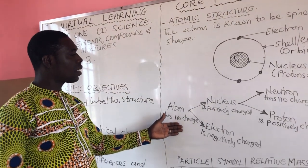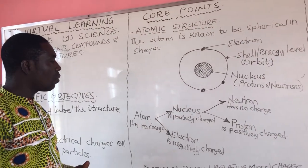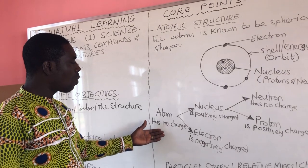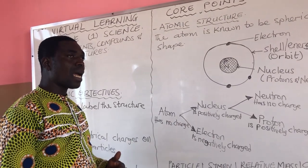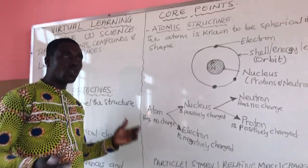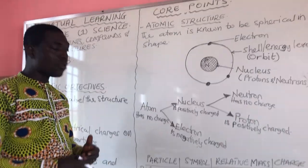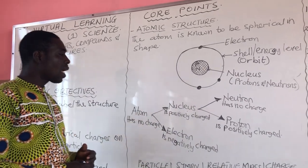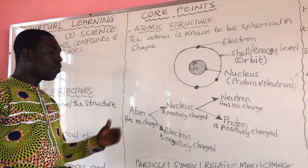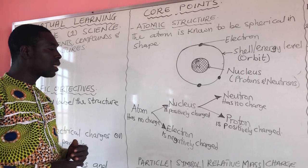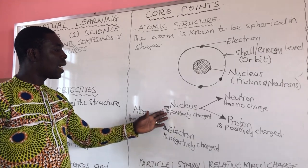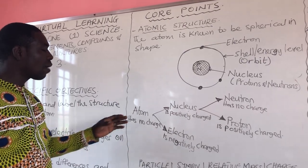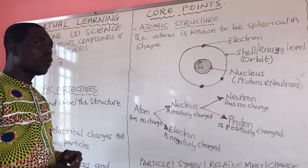Now let's look at the breakdown of the particles. An atom has no charge, which means that an atom is electrically neutral. This is because the protons are positively charged and the electrons are negatively charged — their charges cancel out, thereby making the atom neutral or without charge.